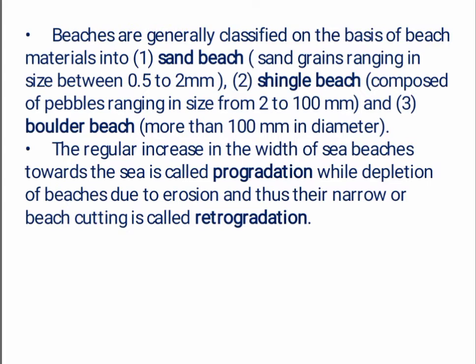In sand beach, sand grains range in size between 0.5 to 2 mm; in shingle beach, pebbles range in size from 2 to 100 mm; and in boulder beach, more than 100 mm in diameter. The regular increase in the width of sea beaches towards the sea is called progradation, while depletion of beaches due to erosion — either narrowing or beach cutting — is called retrogradation.